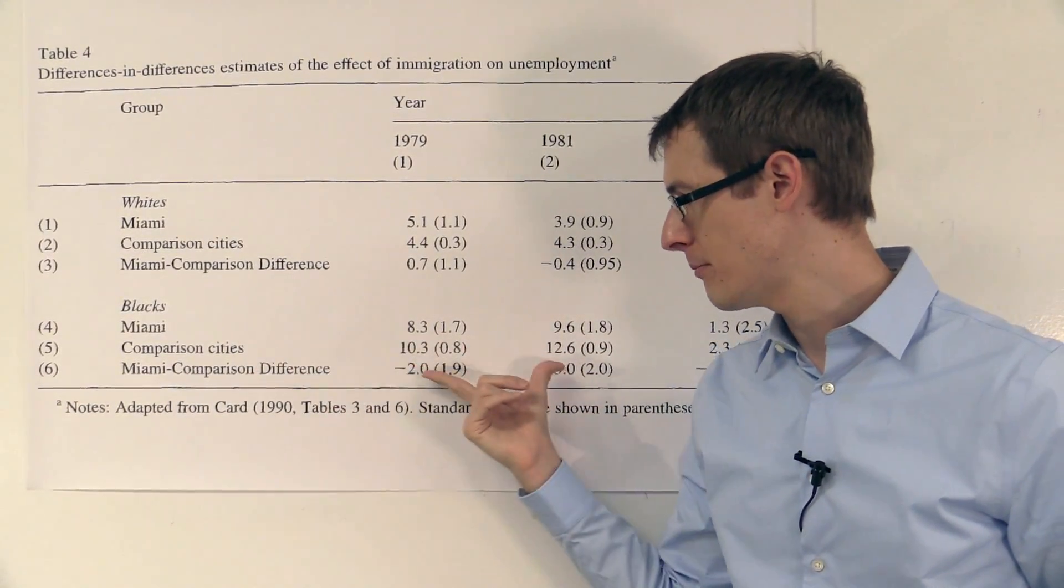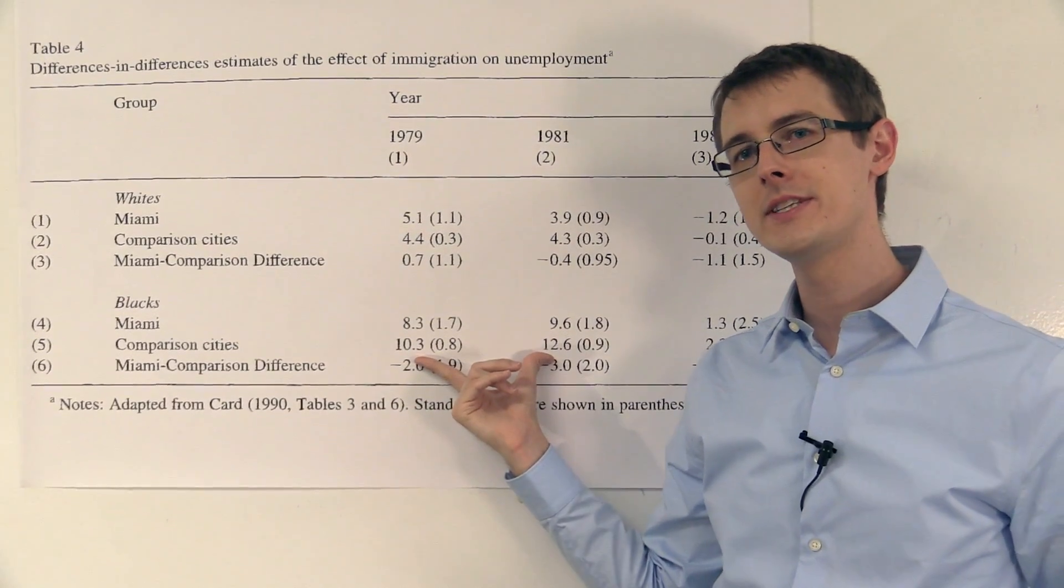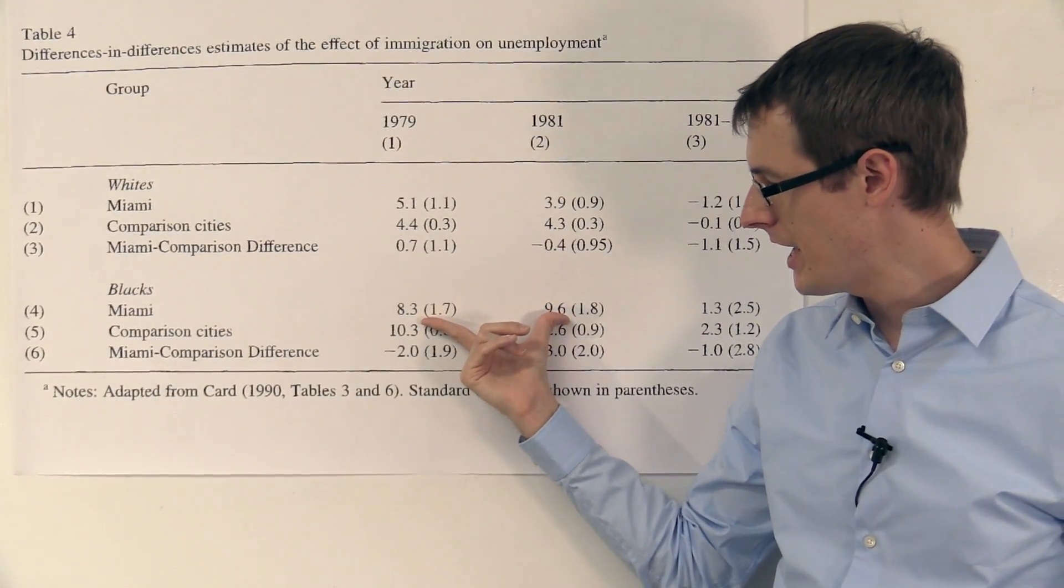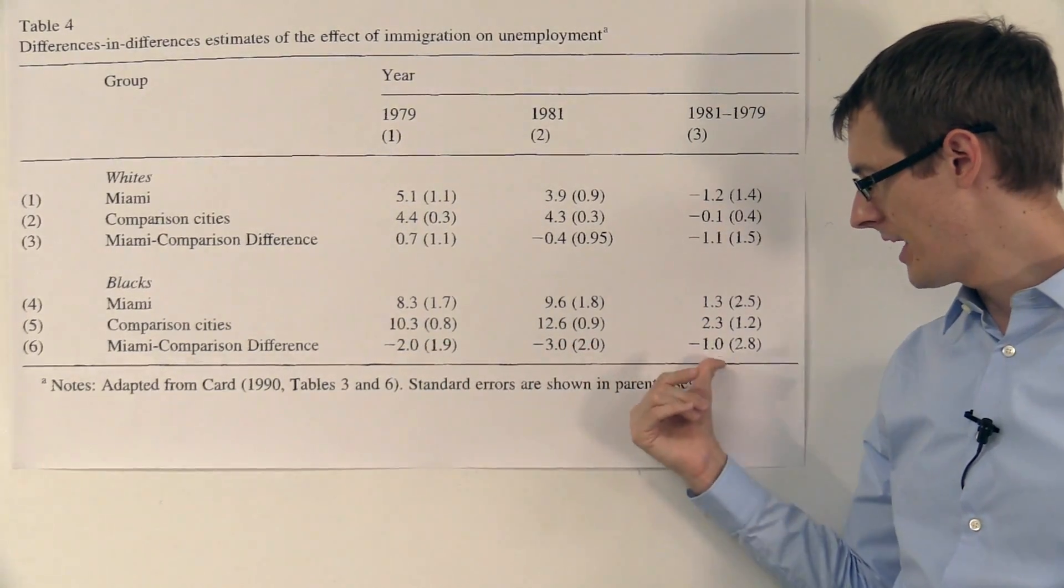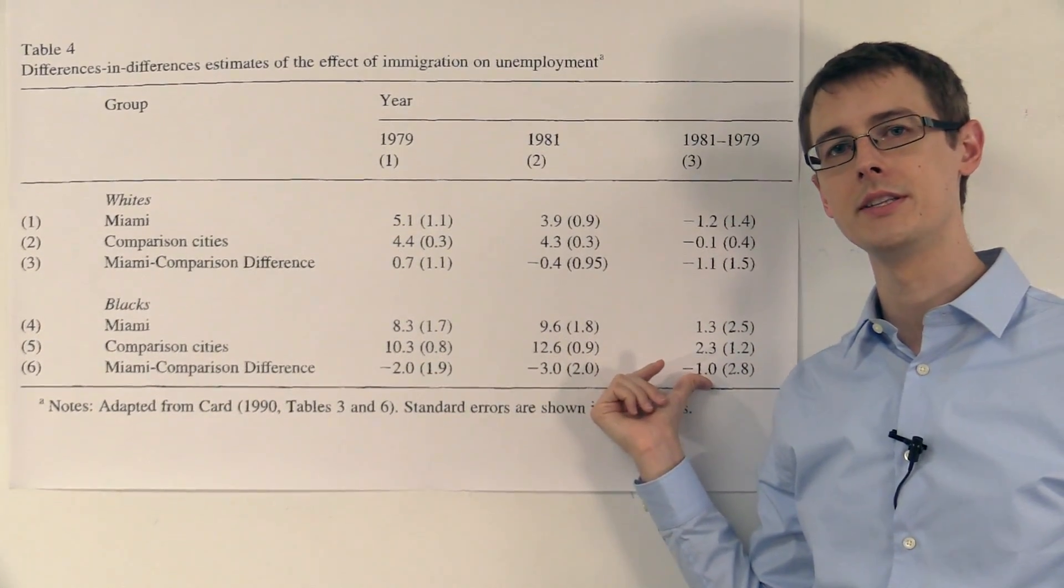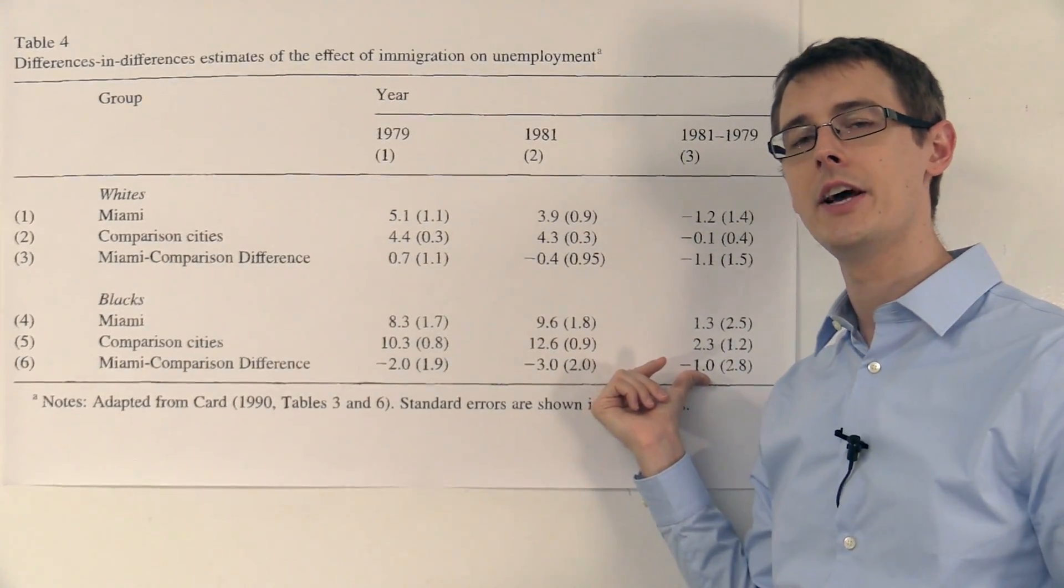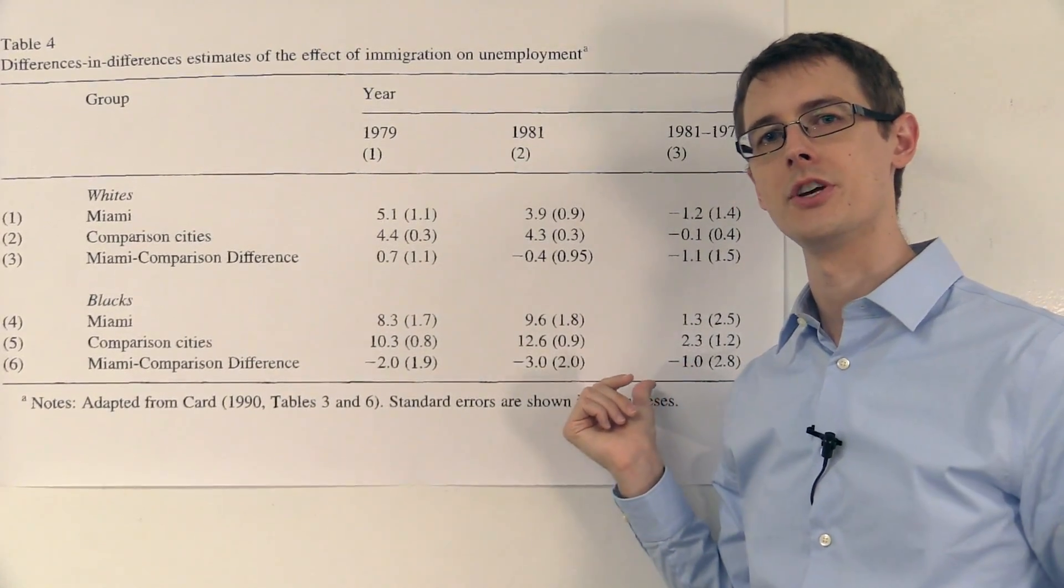Which is exactly the case for the comparison cities. So our difference in difference estimate takes the trend for Miami, subtracts out the trend for the comparison cities, and we're left with minus 1.0%, a decrease in the unemployment rate of 1.0%.